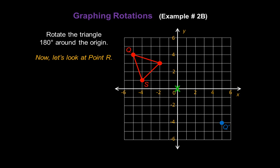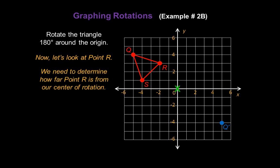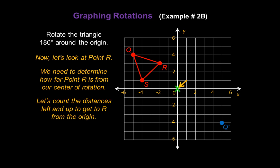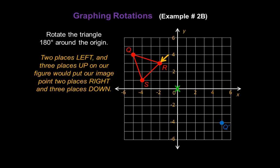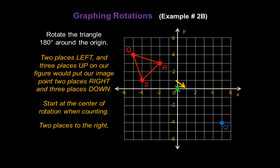Now let's look at point R in our figure. Again, we need to determine how far point R is from our center of rotation, the green X. Let's count the distances left and up to get to R from the origin: two places to the left and three places up. Two places left and three places up on our figure would put our image point two places right and three places down. Don't forget — start at the center of rotation when counting. Move two places to the right and then three places down. And that's point R prime.